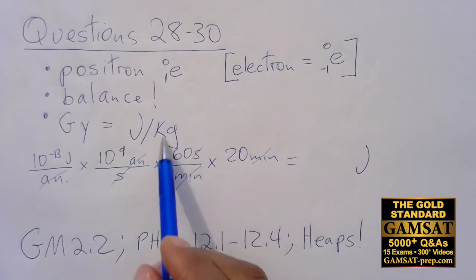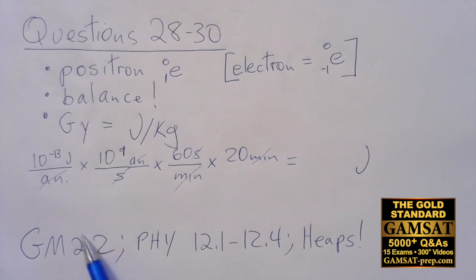Now with the joules I can just divide by kilograms and then I have my grays. This is called dimensional analysis, just paying very careful attention to units. You can see how that's set up in GAMSAT Math 2.2, and you'll see it throughout the HEAPS exams, many instances of this.